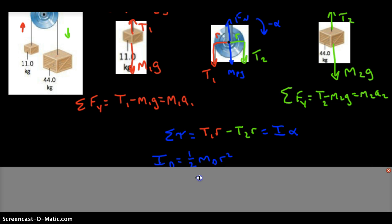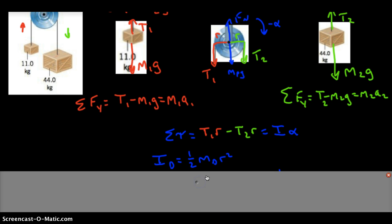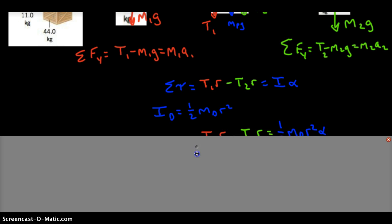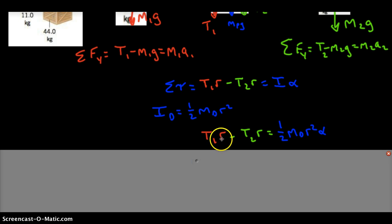So knowing that the moment of inertia of a disc, if you look it up in the table, is one half mass of the disc, R squared, we can substitute that in, and we see the sum of our torques now equals this.